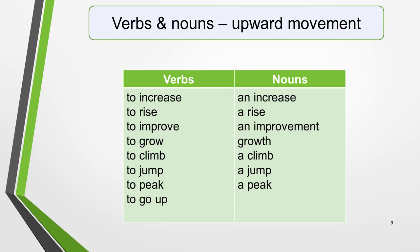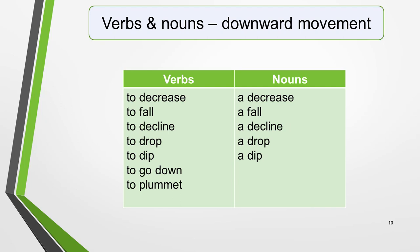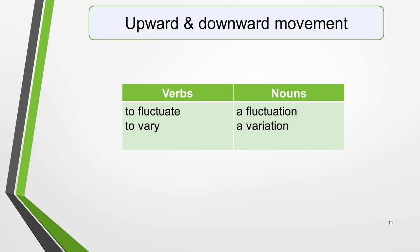The nouns for upward movement include: an increase, a rise, an improvement, growth, a jump, a climb, and a peak. For downward movement, the verbs are: to decrease, to fall, to decline, to drop, to dip, to go down, and to plummet. The nouns are: a decrease, a fall, a decline, a drop, and a dip. For both upward and downward movement, we also have: to fluctuate and to vary.